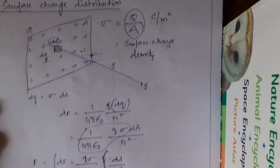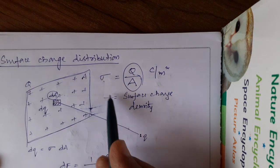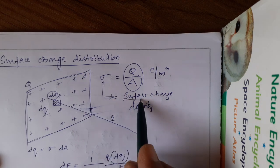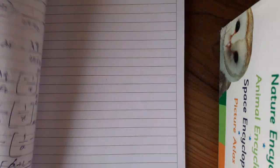This is our surface charge distribution. In this, we define a parameter called sigma. Sigma is known as surface charge density. Like this, we will do. In the next case,